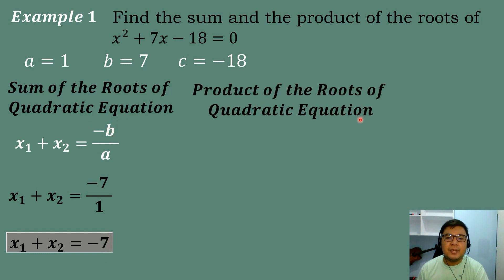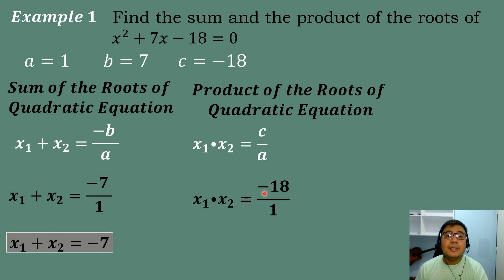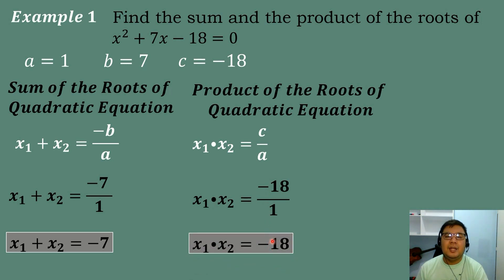Then, let's compute for the product of the roots. Our formula is C all over A. Substituting the corresponding values, the value of C is equal to negative 18 and the value of A is equal to positive 1. Dividing, negative 18 divided by 1 is equal to negative 18. Therefore, the product of the roots of the quadratic equation is equal to negative 18.